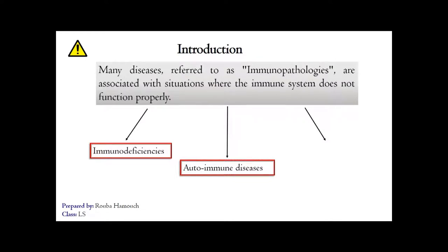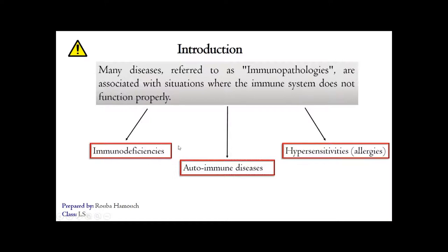The immune system can also attack harmless elements of the environment, such as pollen, causing allergy symptoms. So the third type of immune disorders is hypersensitivities or allergies. In our chapter, we will be discussing only the immunodeficiencies and the autoimmune diseases.